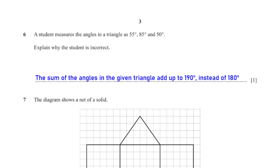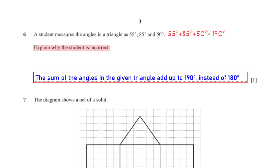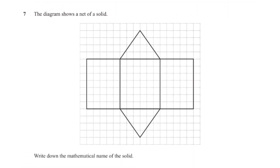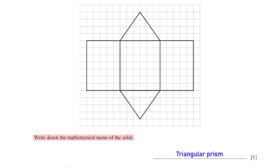A student measures the angles in a triangle as 55 degrees, 85 degrees, and 50 degrees. Explain why the student is incorrect. This is because the sum of the angles the student measures adds up to 190 degrees instead of 180 degrees. The diagram shows a net of a solid. Write down the mathematical name of the solid. The solid is a triangular prism.